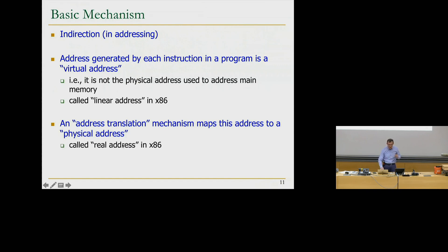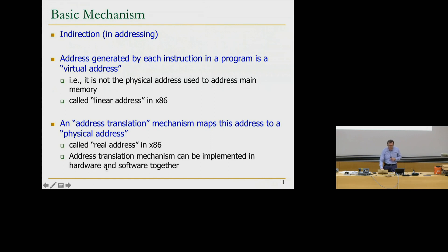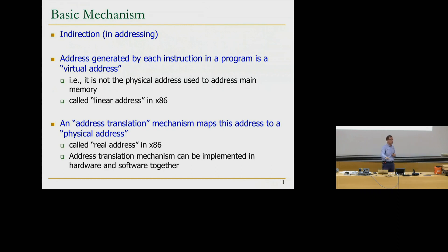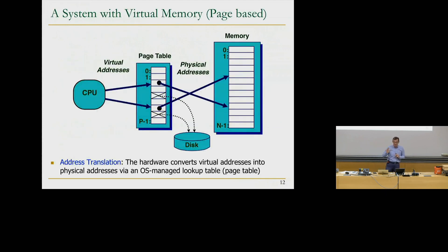The physical address is called a real address in x86. The address translation mechanism can be implemented in hardware and software together. In today's systems it's implemented cooperatively between hardware and software — a very helpful example of hardware-software cooperation. If you implement this purely in software, it becomes extremely slow; you have to have some basic hardware support. As opposed to the CPU directly generating physical addresses, we're going to add another structure called a page table. A page table is associated with a single process — each process has its own page table — and its purpose is address translation.